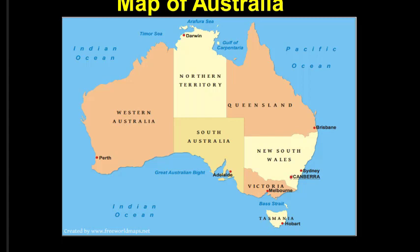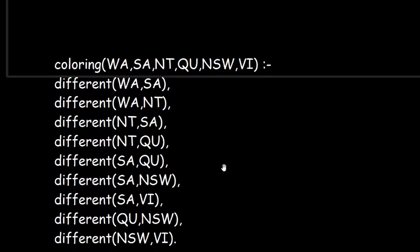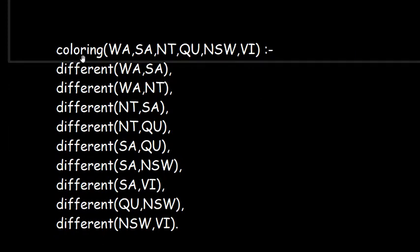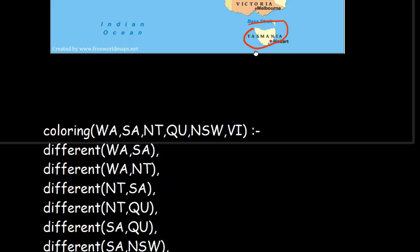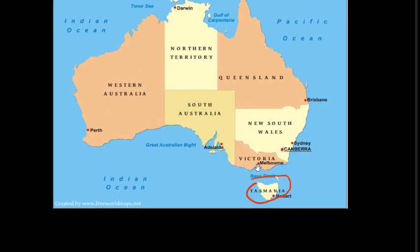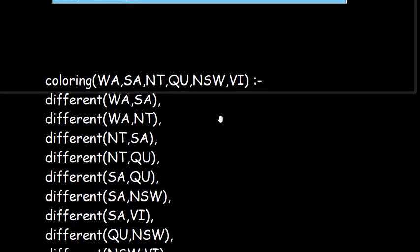In this particular map we can ignore Tasmania because it is not sharing any boundary with any of the other states. So we are concerned with the remaining six states: Western Australia, Northern Territory, South Australia, Queensland, New South Wales, and Victoria. We write their abbreviated forms: WA, SA, NT, QU, NSW, and V.